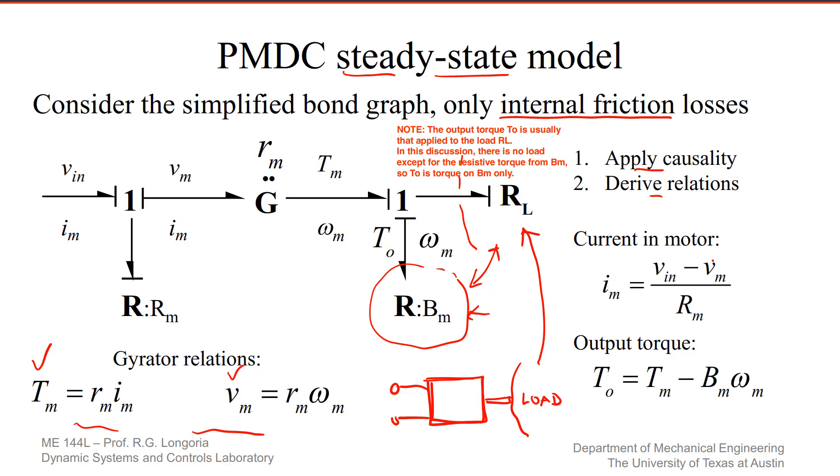I'll assume that you can do that on your own, but the key steps are to show that this current in—by the way, there would be an effort source here that would give you this input voltage—the current in the motor can be shown to be equal to the input voltage minus the back EMF, divided by the resistance. And then you can solve for the torque out, which is going to be the ideal torque, which comes from here, less any losses.